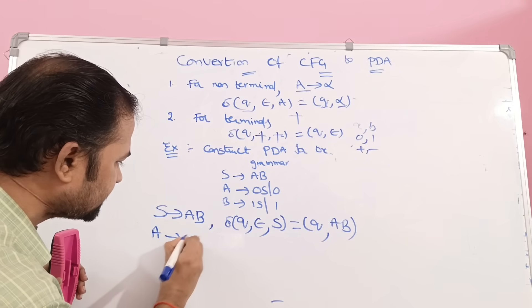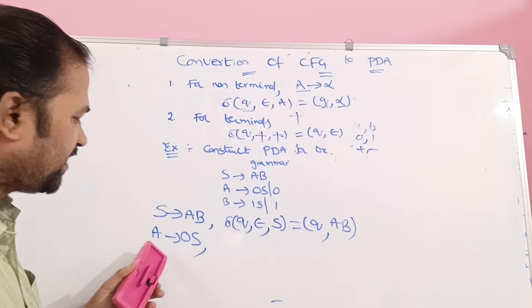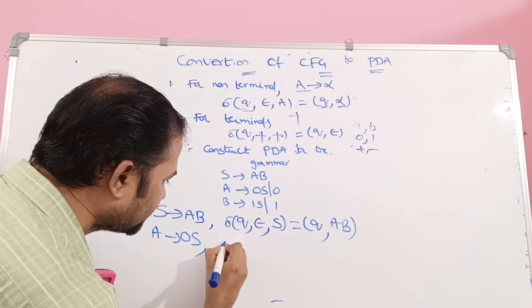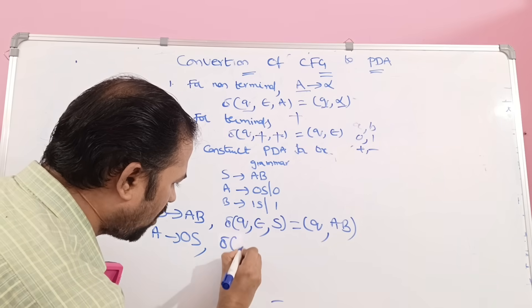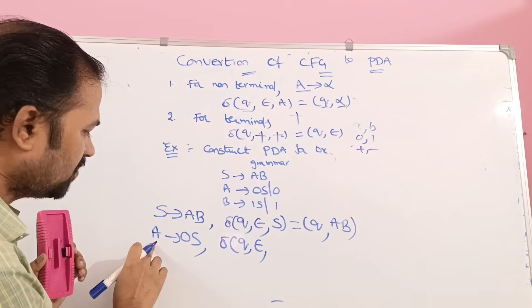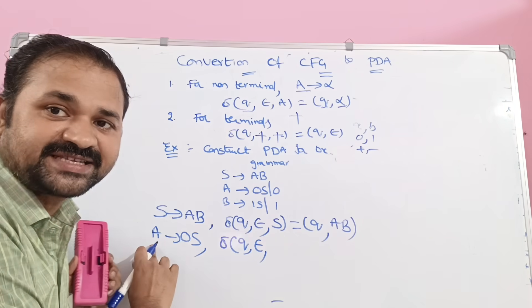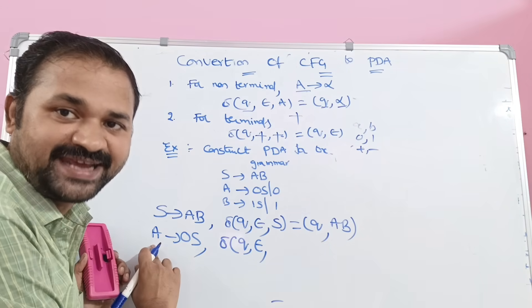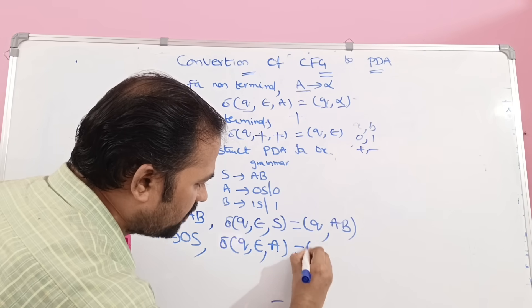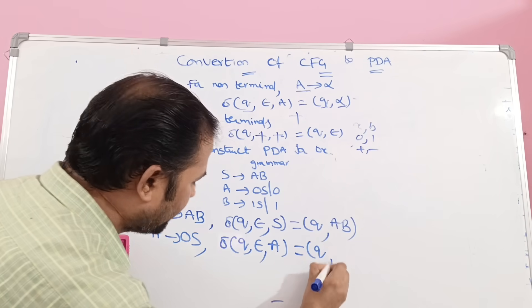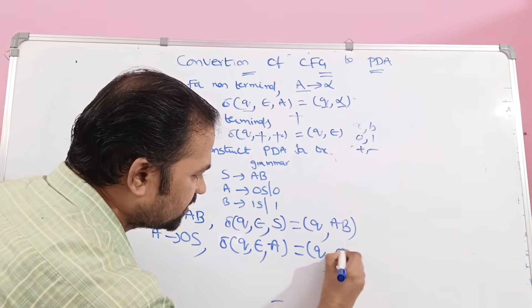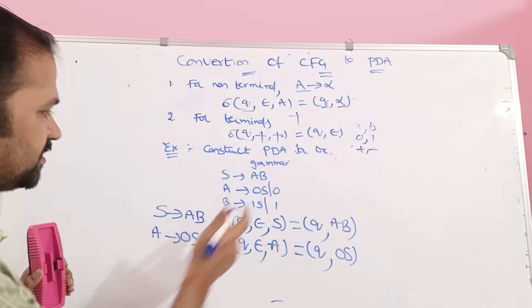Next, A implies 0S. For this production, we can write it as delta of (Q, epsilon, A) = (Q, 0S). Here A is the left-hand side of the production, and 0S is the right-hand side.